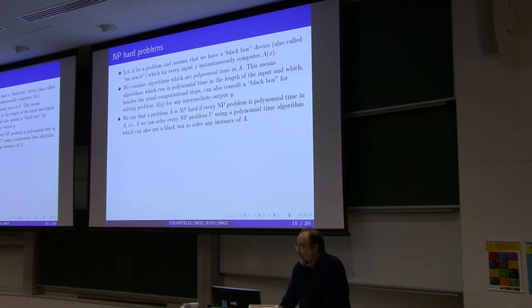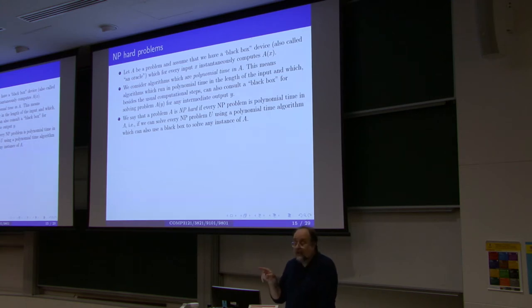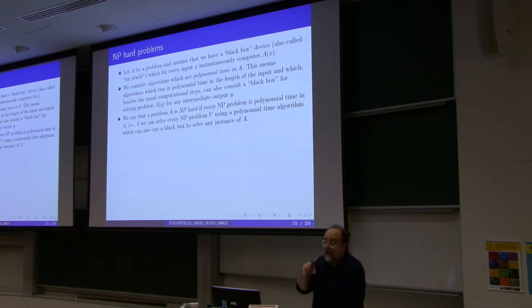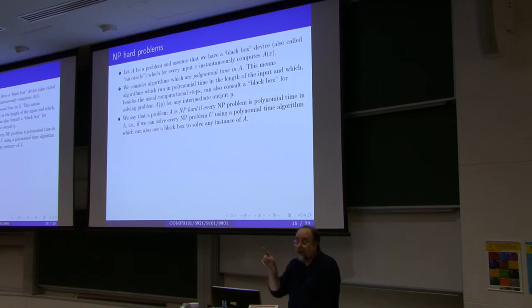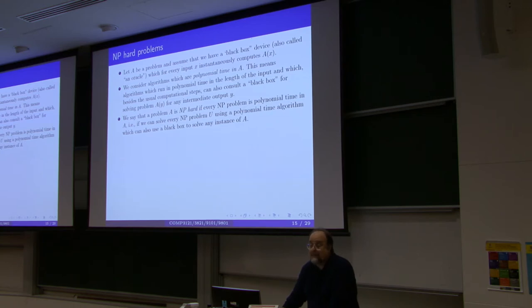Assume that you have an additional functionality — an oracle — which somehow magically returns an answer to a particular problem. Then if such an oracle allows you to solve all NP problems in polynomial time by using this coprocessor for this particular problem, then we say that this problem is NP-hard. Why is it NP-hard? Because if you had something that solves that problem, you can use that something to solve any NP problem in polynomial time. We will see examples soon.